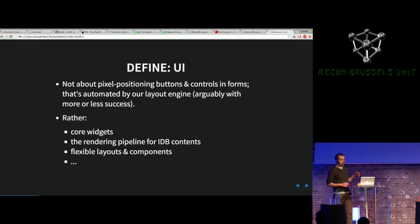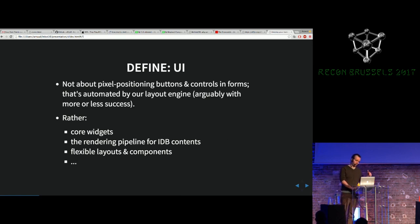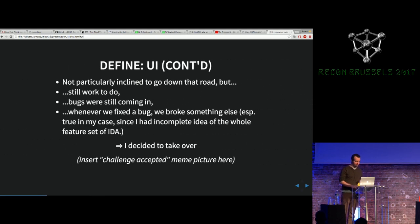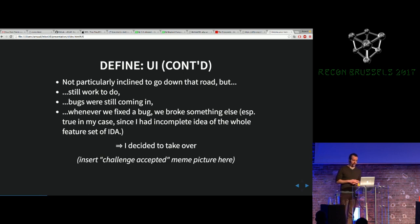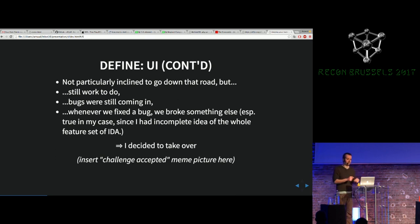When I'm talking about UI, it's not about a button being misplaced. This is about the rendering pipeline — how the stuff you place in your IDB is actually rendered on the screen. We still had bugs coming in and somebody had to take over. We had the blanket problem where when I fixed one bug in one place, it typically broke something in another place, and you could do that forever. But we decided we would try to do better.